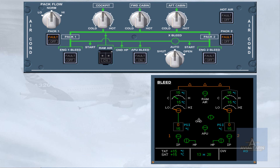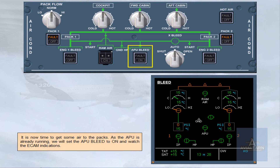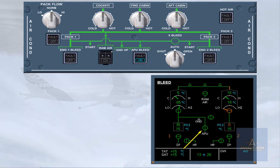It is now time to get some air to the PACs. As the APU is already running, we will set the APU bleed to ON and watch the ECAM indications. Notice the APU valve indication has changed to inline green. The cross bleed valve has automatically opened — notice the cross bleed selector is in the auto position. Both feed lines to the PACs have been connected.